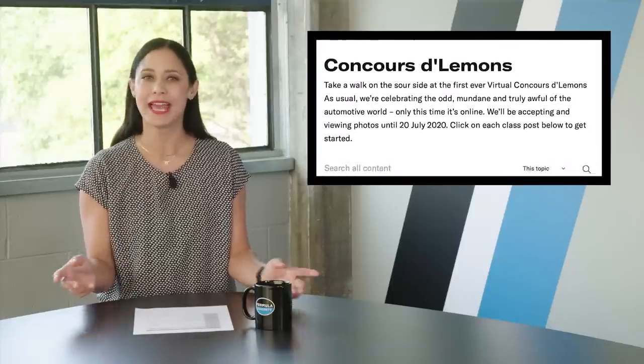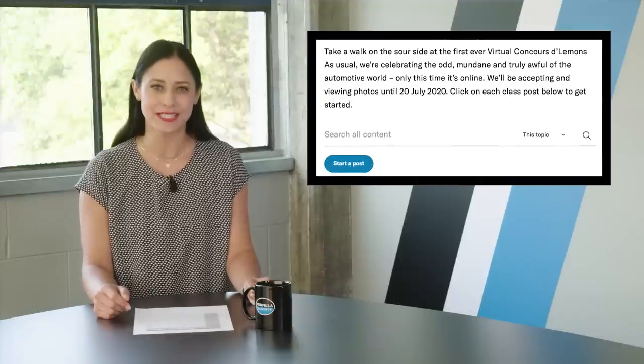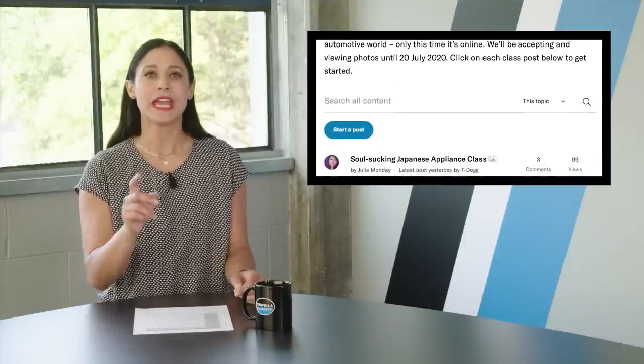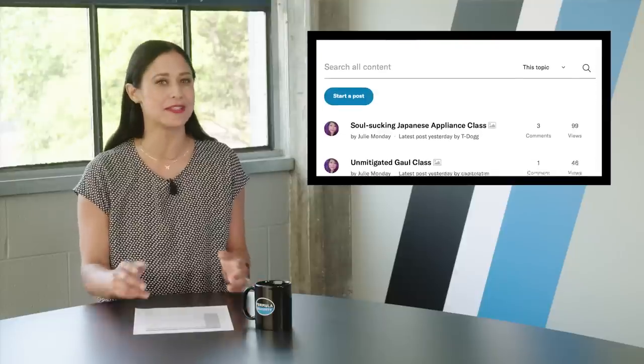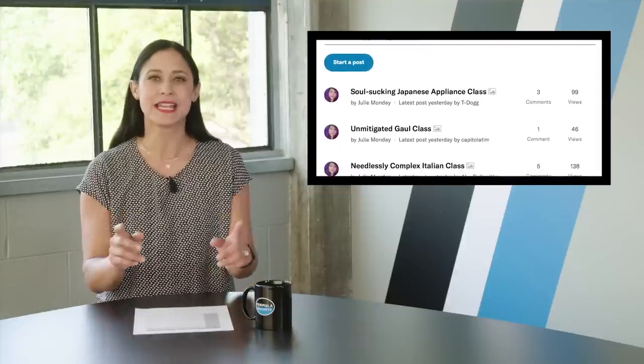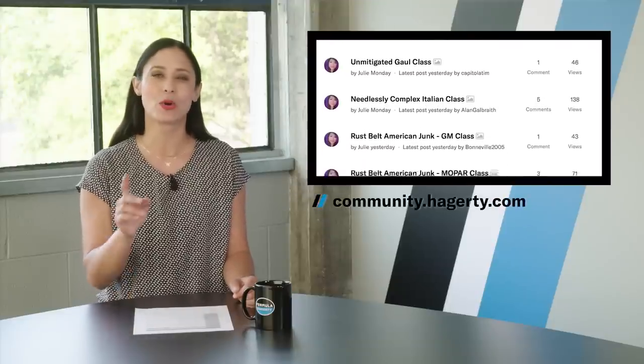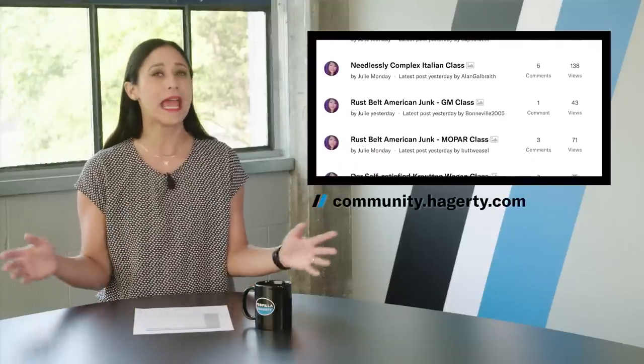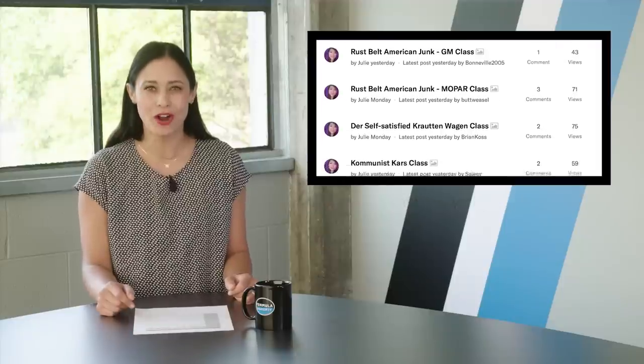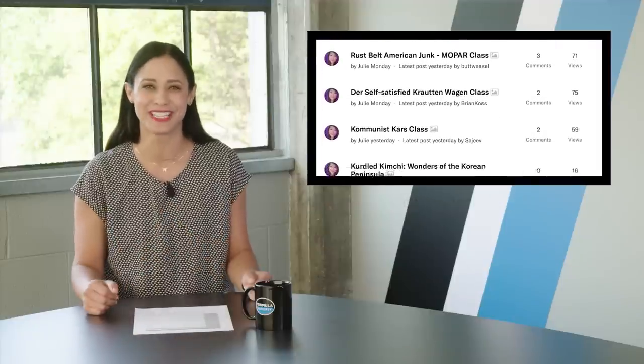And now you can join in. Hagerty is accepting submissions until July 20th. So if you have a car you think that fits in any of these categories, send over the pictures or videos to community.hagerty.com or click the link below. With a bit of luck and hard work, your car could be the best piece of junk out there.